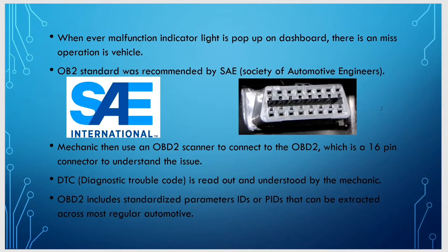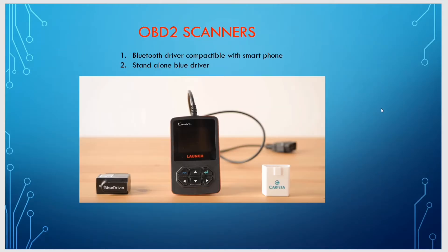Mechanics read the data using a 16-pin port — you can see it on the right-hand side. By connecting an OBD2 connector into it, the mechanic will understand what is wrong in your vehicle. It will read out the code and the malfunctioning part, and they will fix the issue. OBD2 includes standardized parameter IDs and PIDs that can be extracted across most regular automotive vehicles.